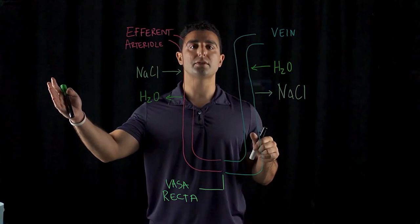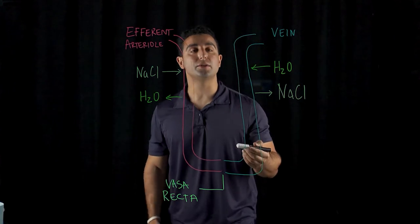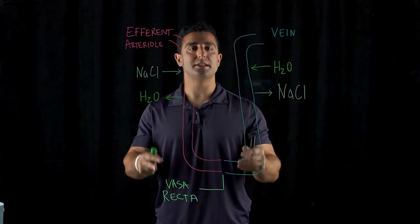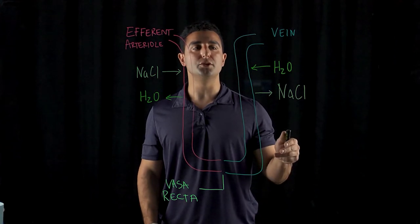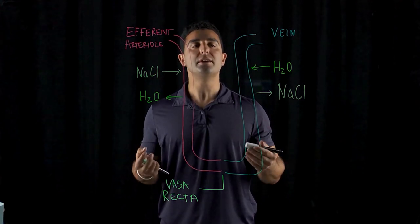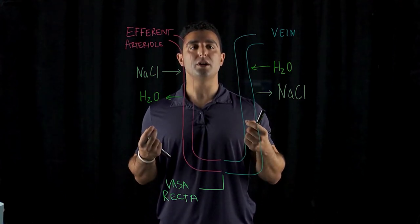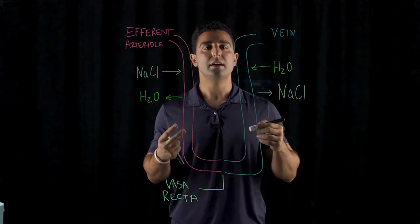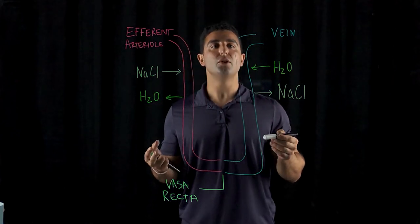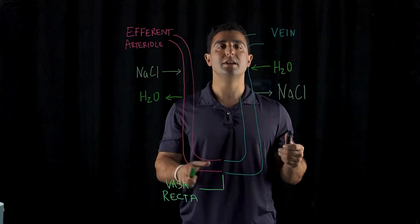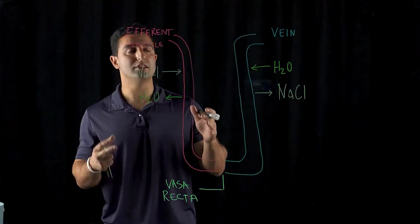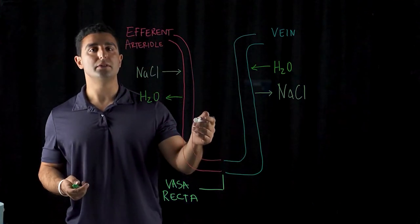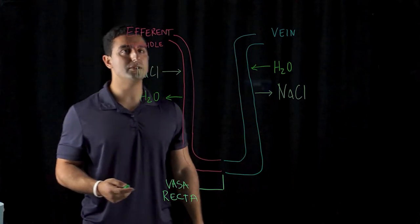The vasa recta now is called the countercurrent exchange because the whole purpose of it is to maintain the integrity of the renal medulla in order to be very, very concentrated. So we're looking at the concentration and volumes of urine. So during urine formation, this needs to be maintained in order to maintain the osmolarity of the renal medulla.